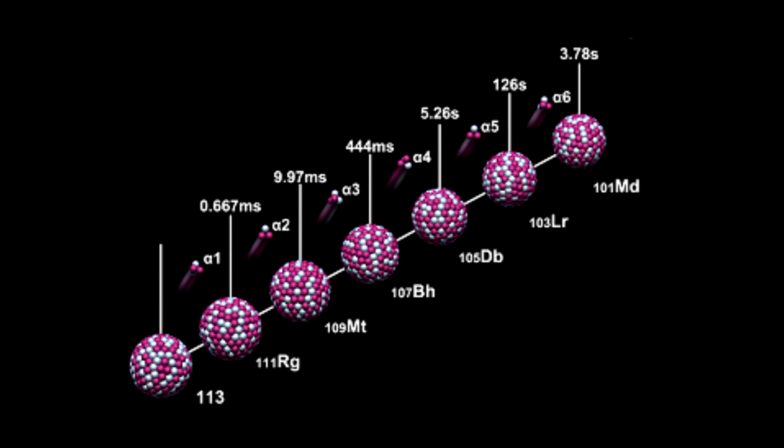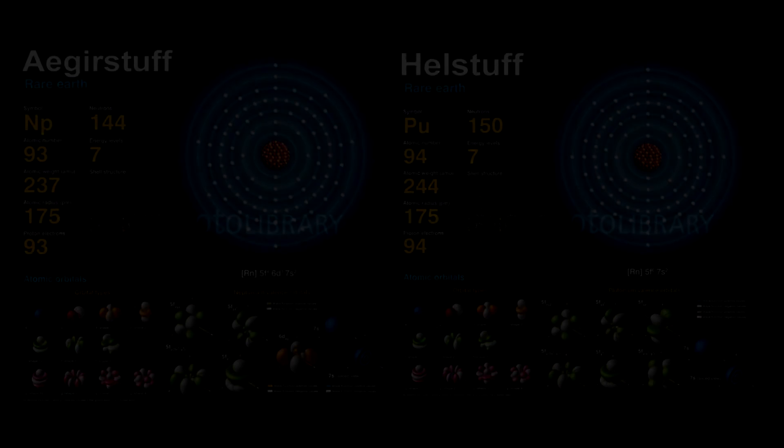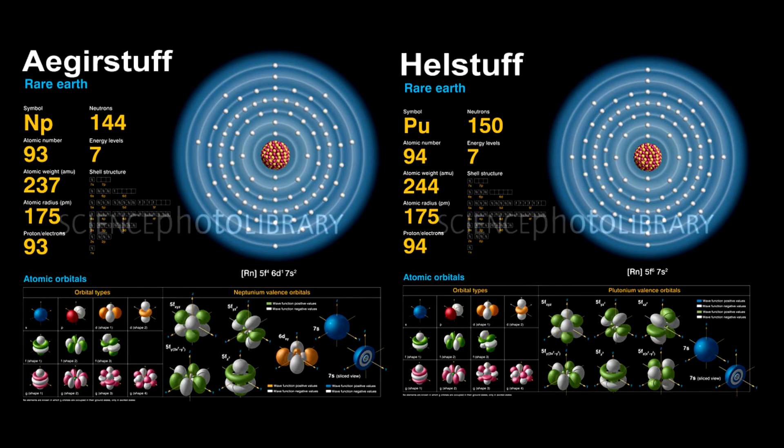By shooting motes into kernels, worldcan folk have shifted samesteads of one first stuff into samesteads of another. Thus did they make ymirstuff into eigerstuff and helstuff, and they have afterward gone beyond these.